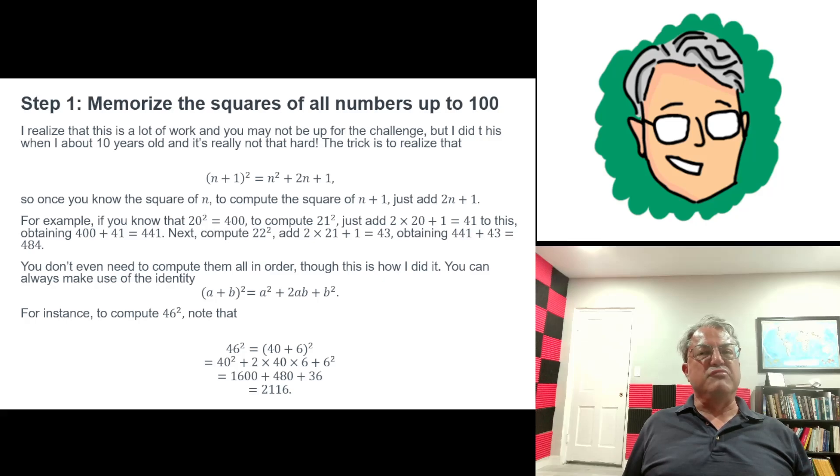You might want to do this one step at a time. 2 times 40 is 80. 80 times 6 is 480. So, we add 480 to 1,600. That gives you, what, 2,180. And, oh, no, 2, wait. Did I do? 1,600 plus 480 is 2,080. Sorry, I make mistakes sometimes. I'm not perfect. And then, we have to add 6², which is 36. That gives you 2,116. So, that's how you can get 46². You didn't have to go one step at a time up from 45². You could just skip steps like this. But anyway, if you do this enough time, eventually you'll memorize all the squares of all the numbers up to 100.